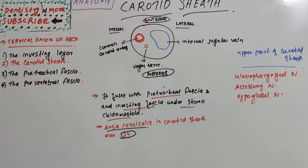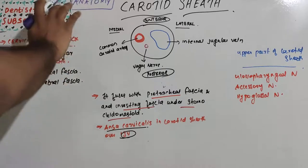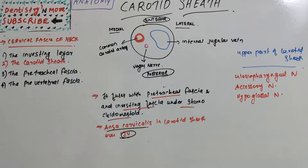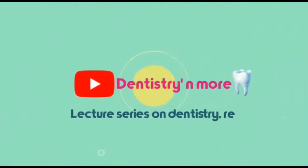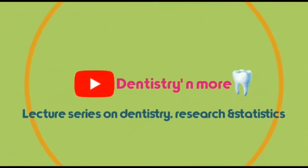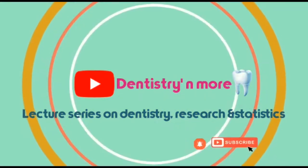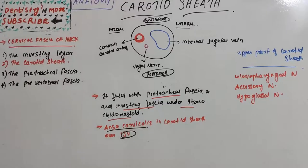Hello everyone, welcome back to another session in dentistry and more. Today we have a very important but small topic in human anatomy: carotid sheath, which is a frequently asked short note in university exams. Carotid sheath is an anatomical term for the fibrous connective tissue that surrounds the vascular compartment of the neck. It is a part of the deep cervical fascia of the neck.